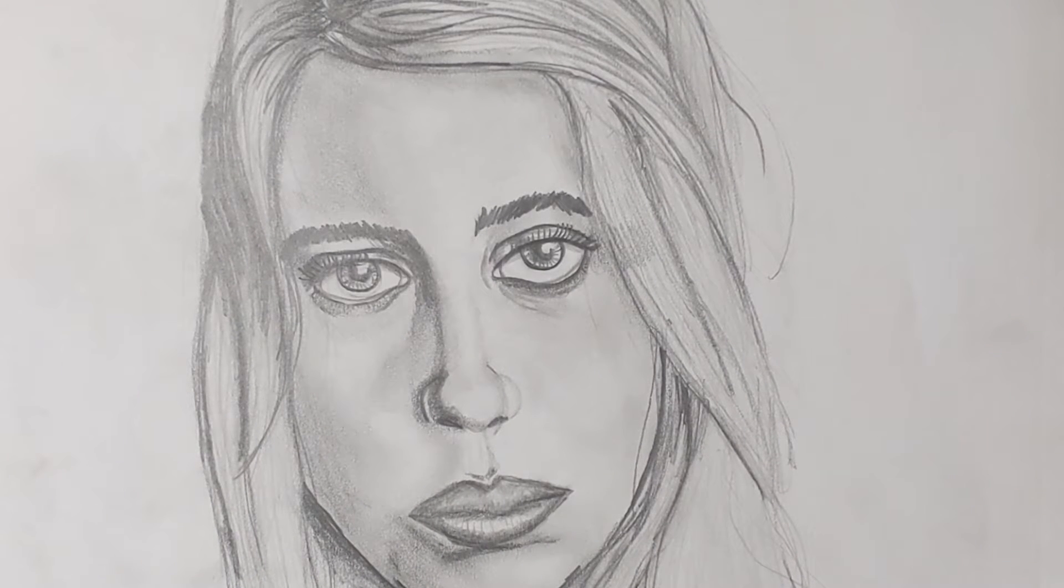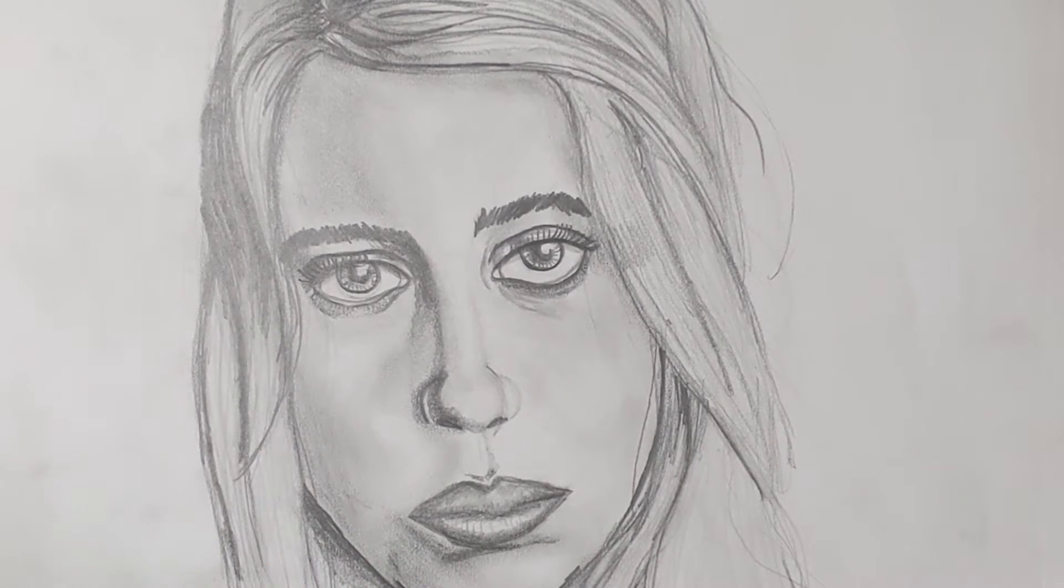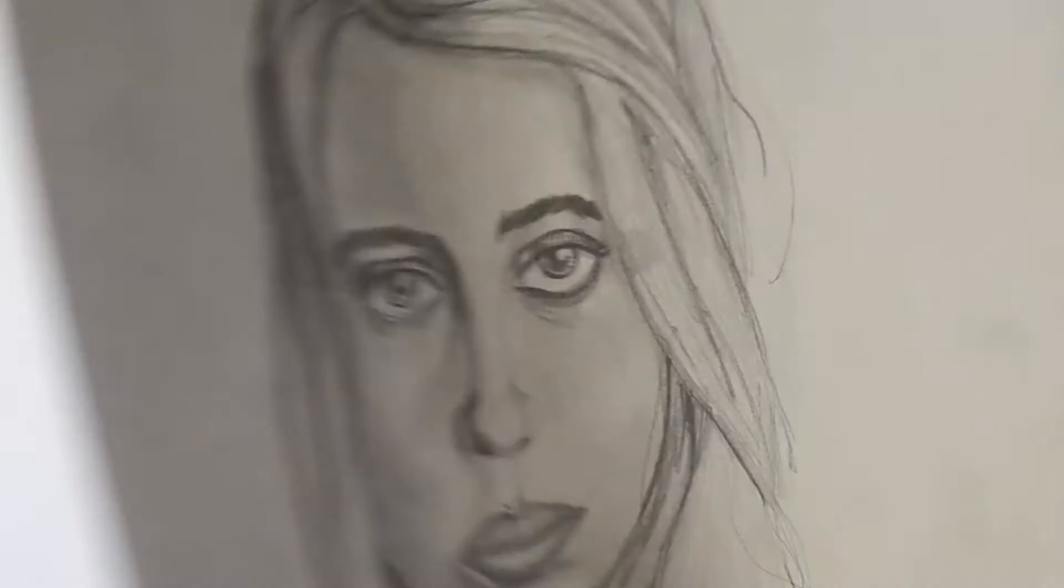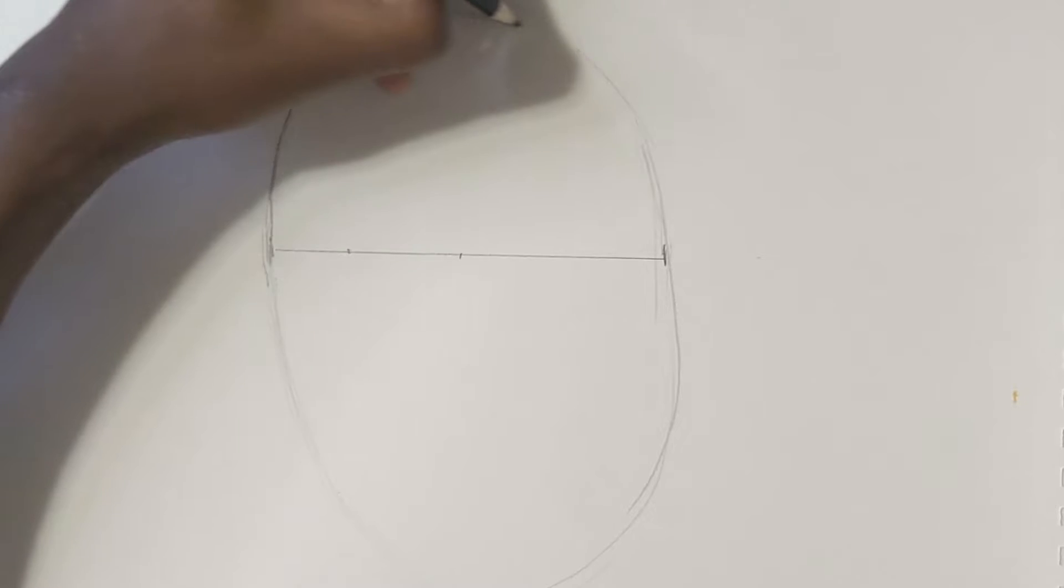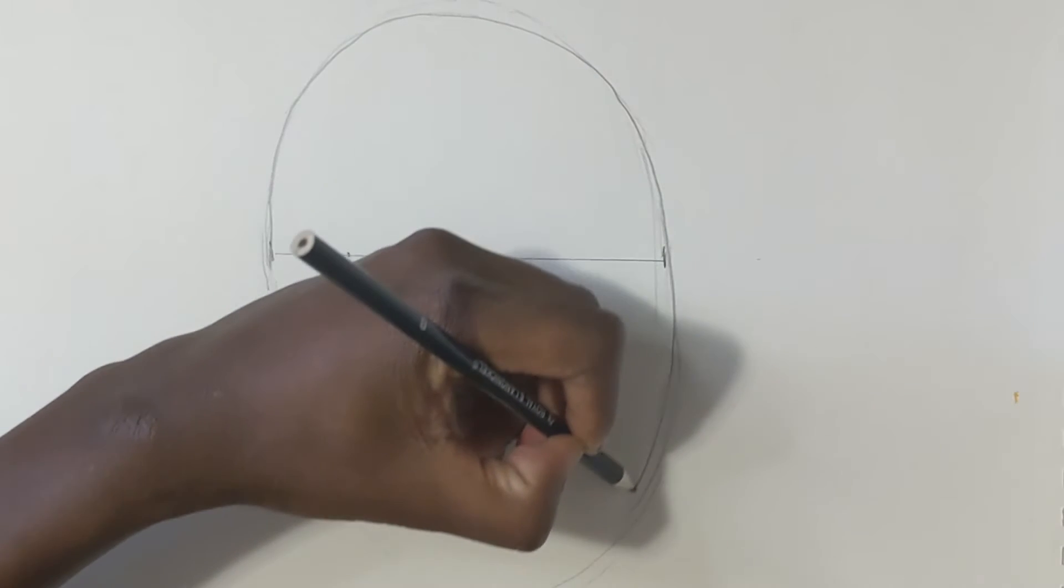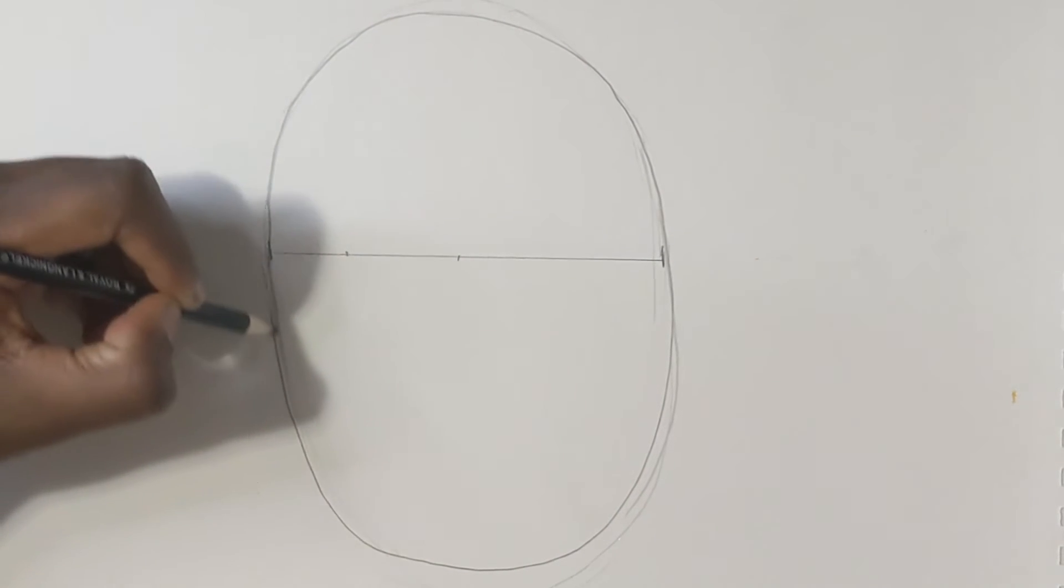First thing you're going to do - you need to start with a big oval shape. I'll sketch my oval and make it a little darker so you guys can see it. I actually made that a little too low, so that's perfect.